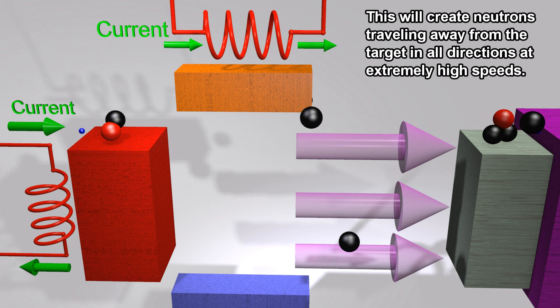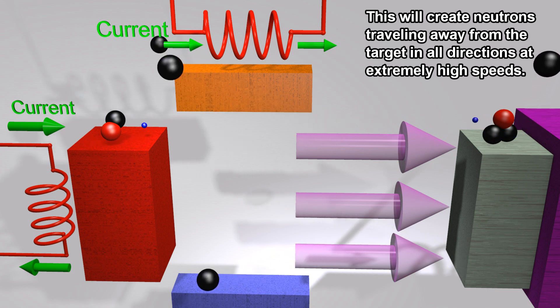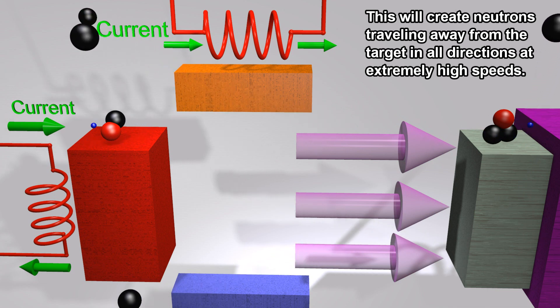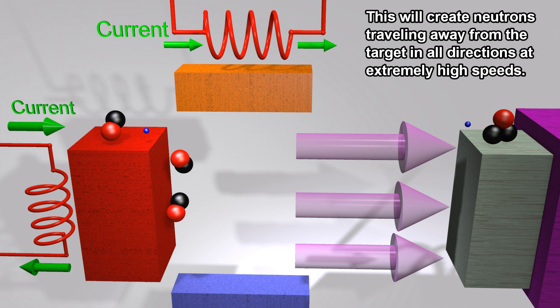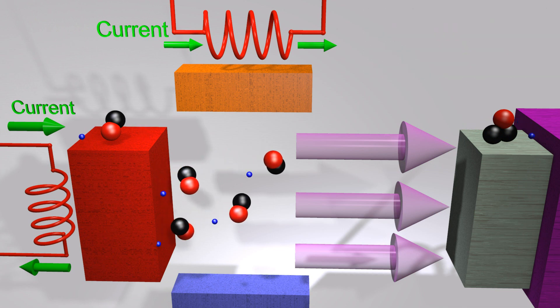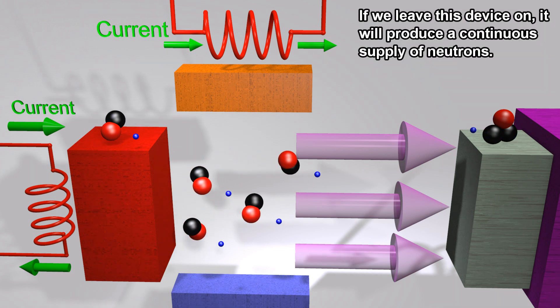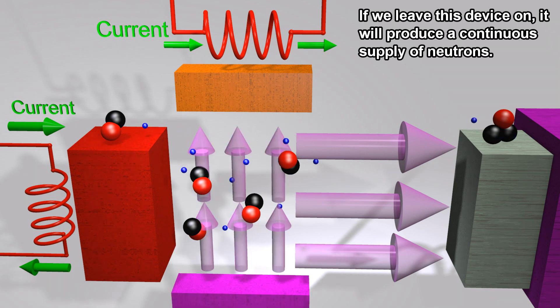This will create neutrons traveling away from the target in all directions at extremely high speeds. If we leave this device on, it will produce a continuous supply of neutrons.